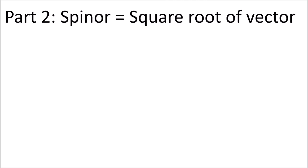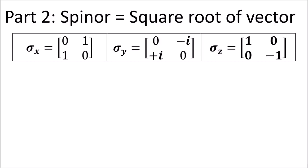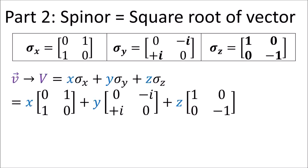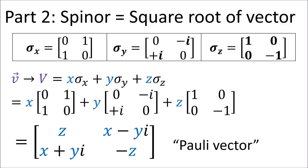In part two I show how spinors can be thought of as the square roots of certain vectors. I show this by taking the Pauli matrices and writing a vector as a linear combination of the Pauli matrices to get a two by two complex matrix called a Pauli vector.